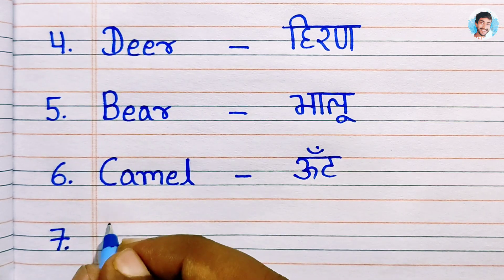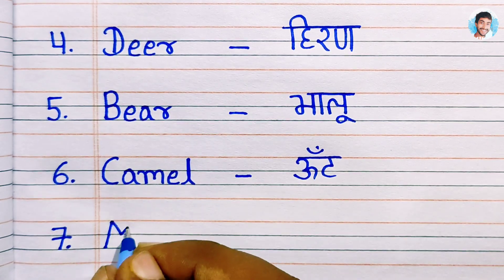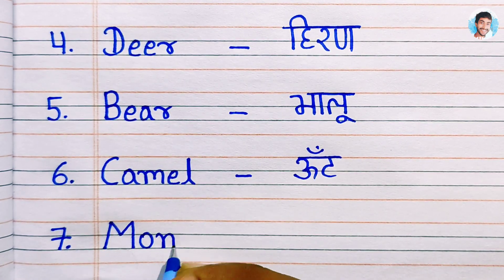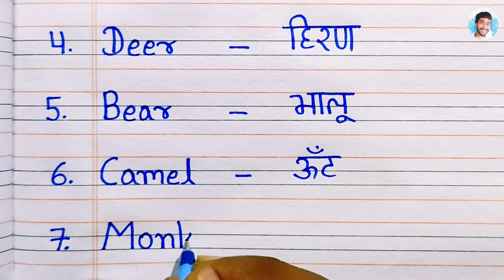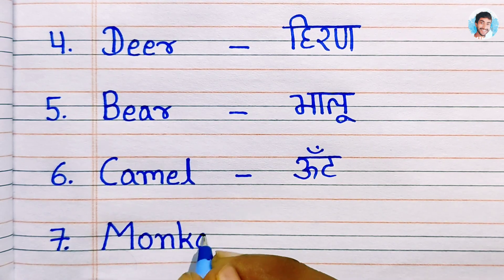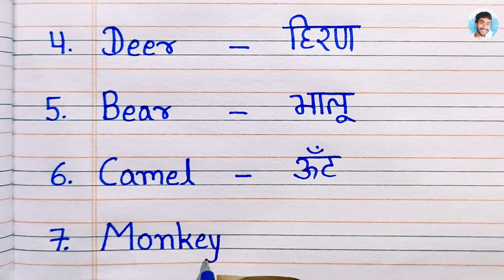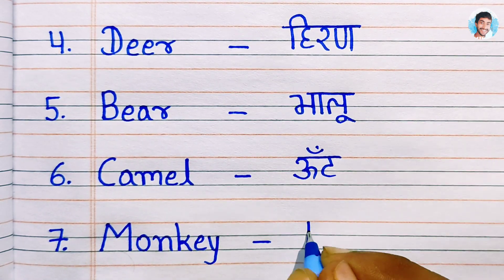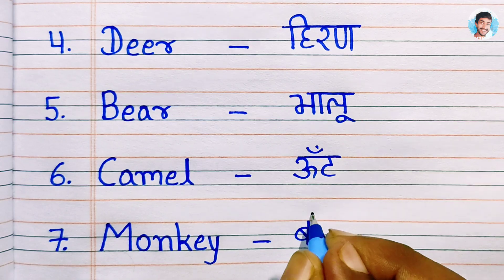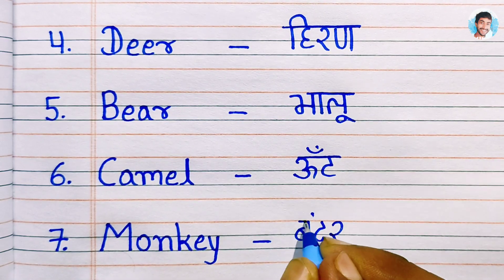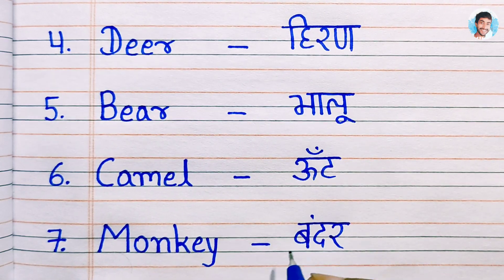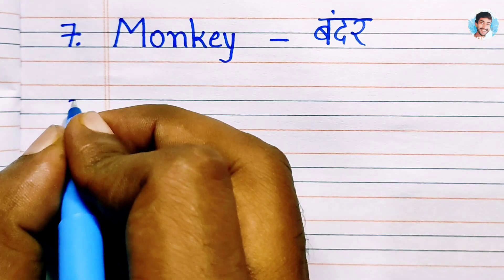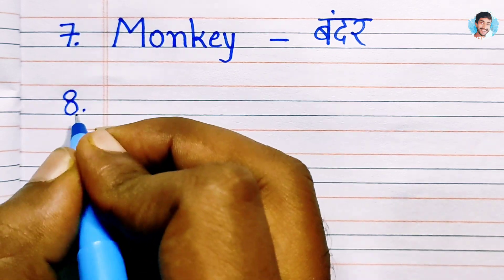Number 7: Monkey. M.O.N.K.E.Y. Monkey means bandar.